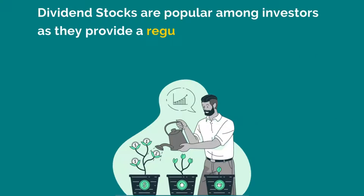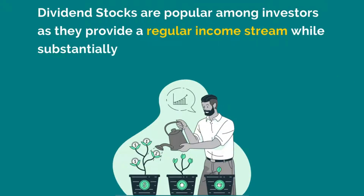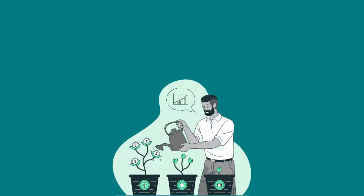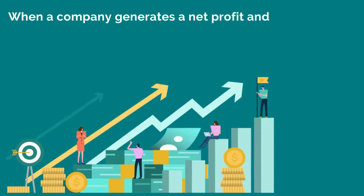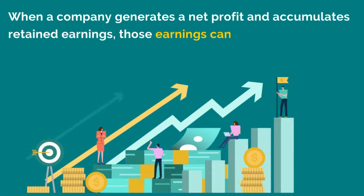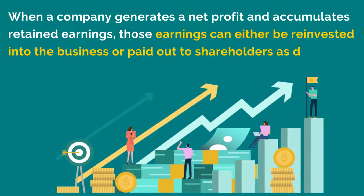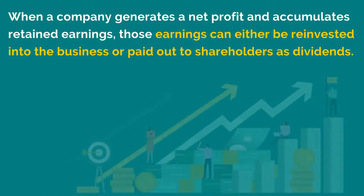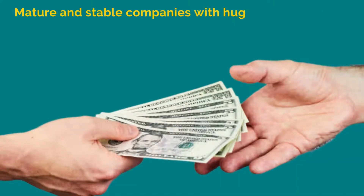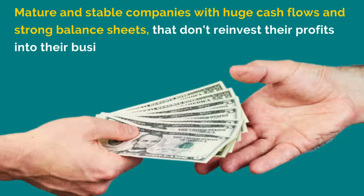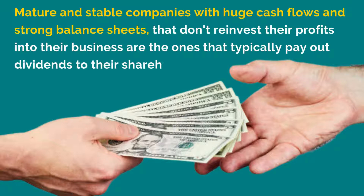Dividend stocks are popular among investors as they provide a regular income stream while substantially increasing total returns and also reducing overall portfolio risk. When a company generates a net profit and accumulates retained earnings, those earnings can either be reinvested into the business or paid out to shareholders as dividends. Mature and stable companies with huge cash flows and strong balance sheets that don't reinvest their profits into their business are the ones that typically pay out dividends to their shareholders.